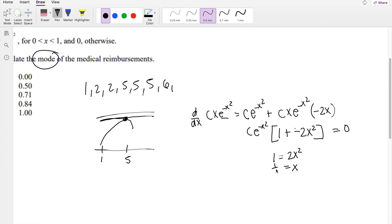x² equals 1/2. And then x equals square root of 1/2, which equals 0.707, approximately 0.71, our answer, C.